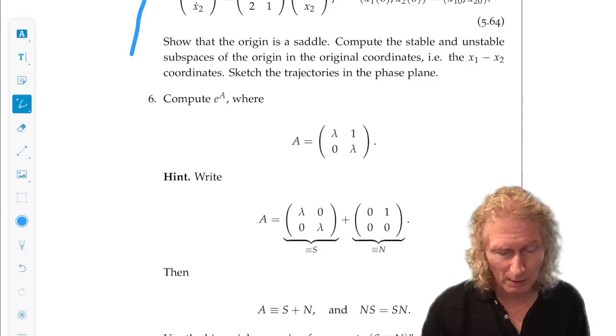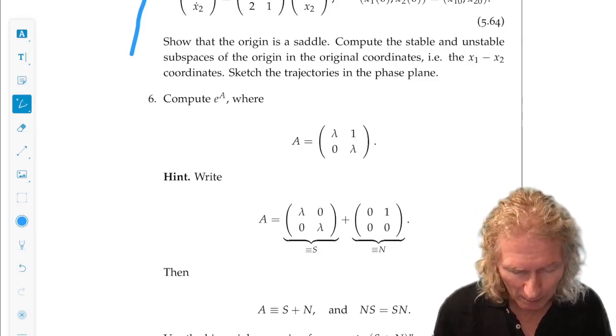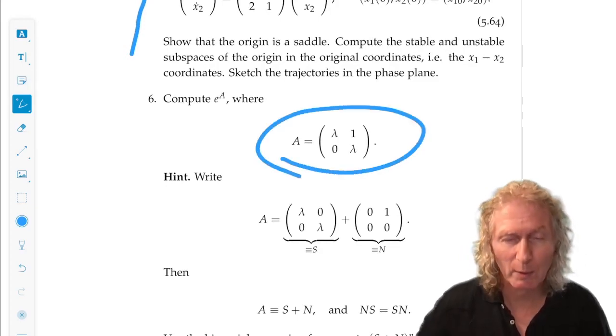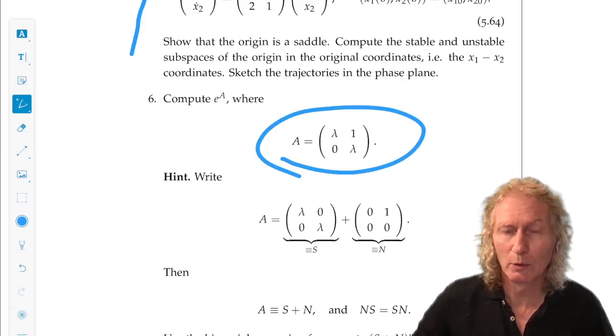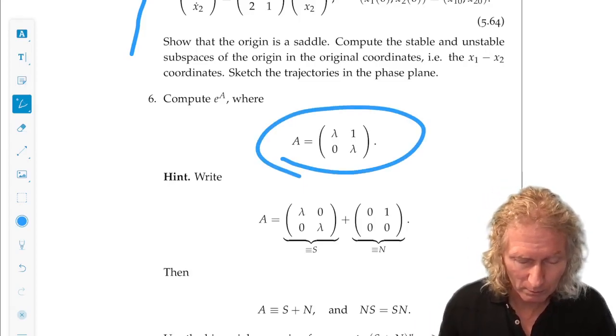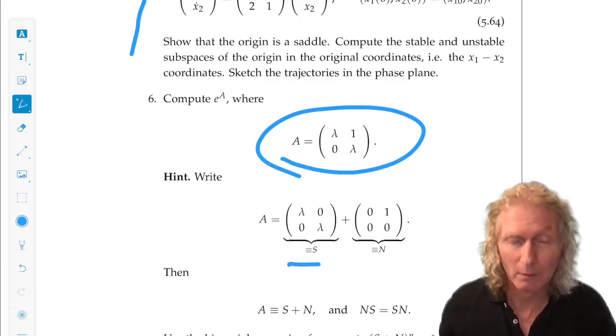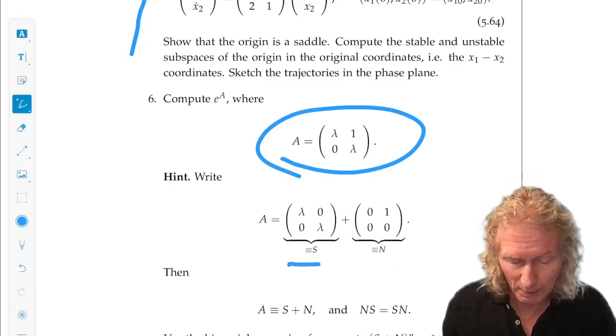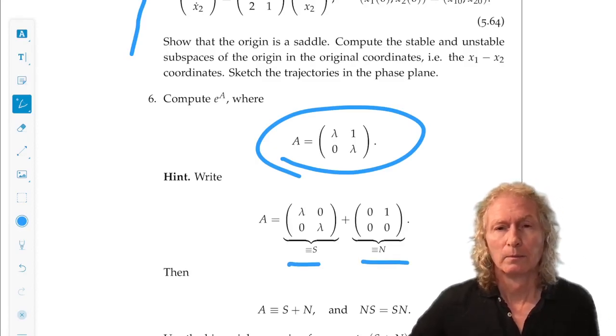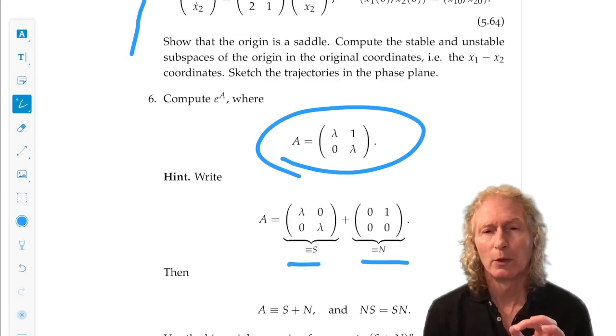Problem 6 is computing e to the A for an example where A is non-diagonalizable. In that case, we can break it up into the sum of a diagonal plus a non-diagonal but a nilpotent.